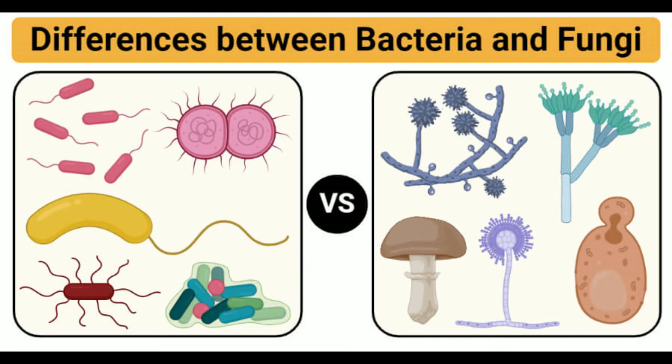Bacteria vs. Fungi: Definition, 21 Major Differences, and Examples. Bacteria Definition: Bacteria are single-celled microscopic organisms that are characterized by the presence of an incipient nucleus and few membrane-less cell organelles.